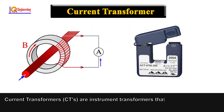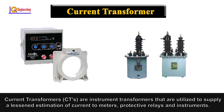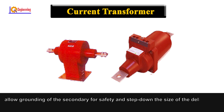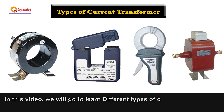Current Transformers (CTs) are instrument transformers utilized to supply a current estimation to meters, protective relays, and instruments. CTs give isolation from the high voltage primary side, allow grounding of the secondary for safety, and step down the delivered current to a value that can be securely handled by the instruments. In this video, we will learn about different types of current transformers.